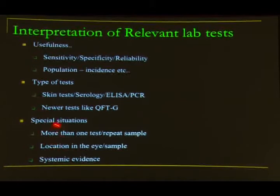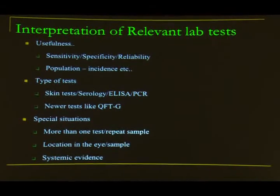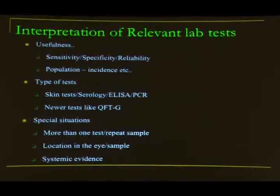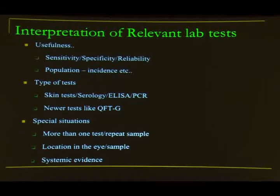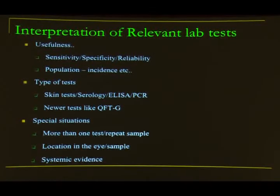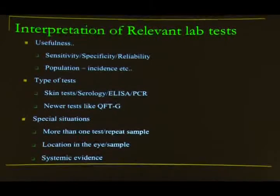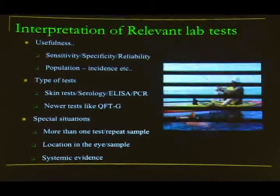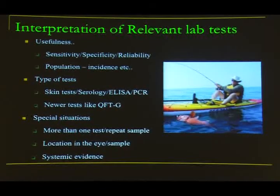Sometimes you need to repeat tests or the sample, and consider the location of testing — blood, aqueous, or vitreous. You need systemic evidence to guide you. As Dr. JB often says, don't go on a fishing expedition.